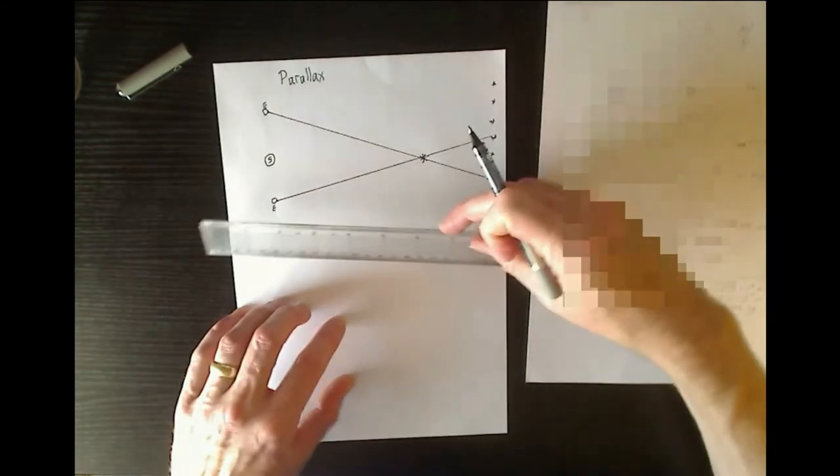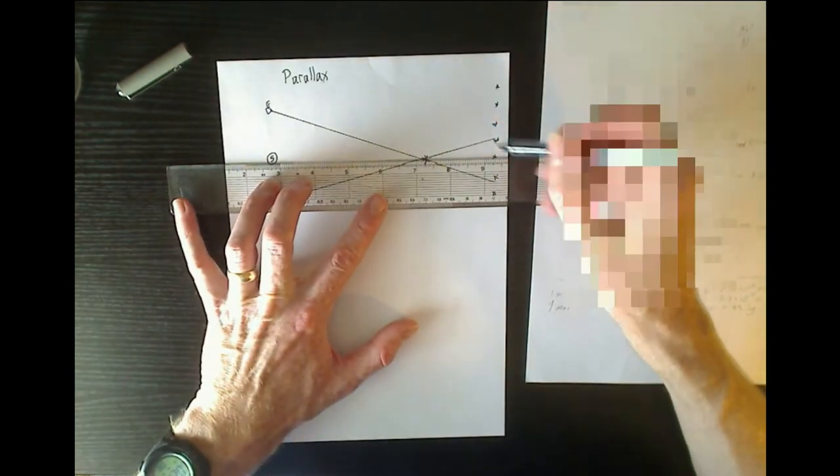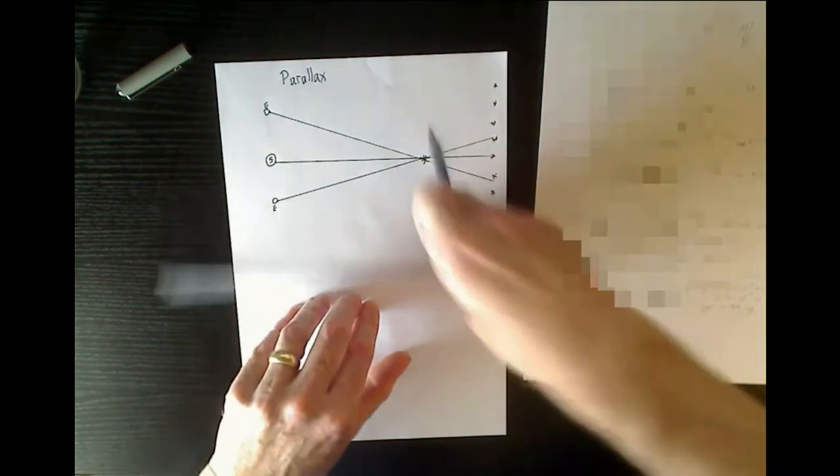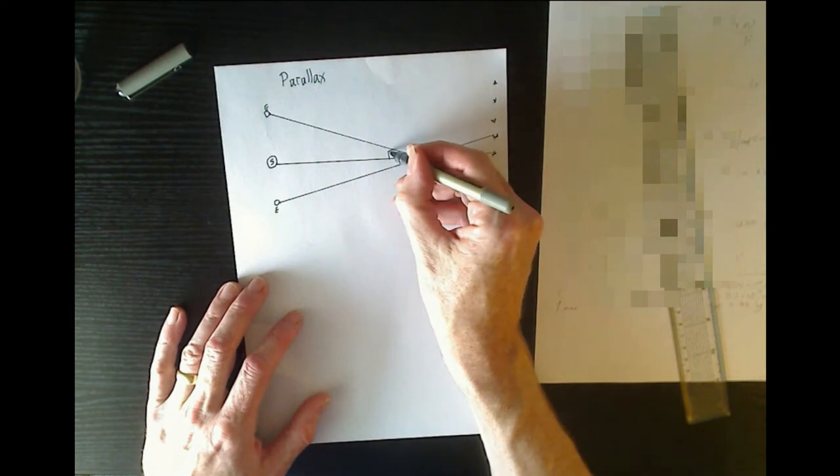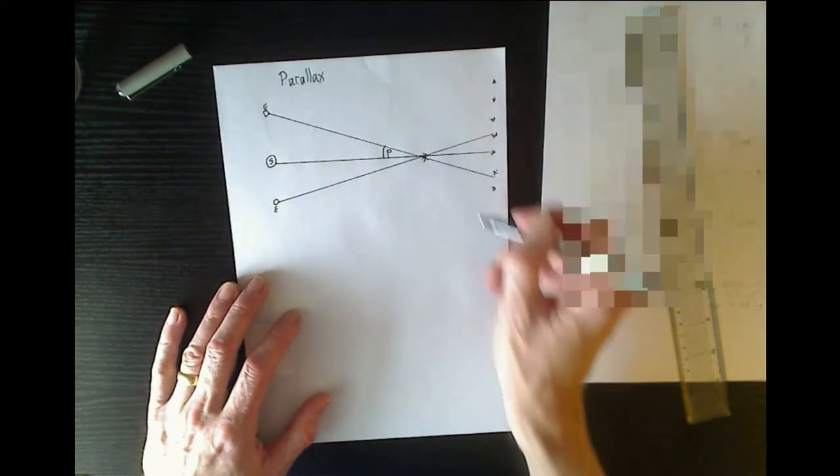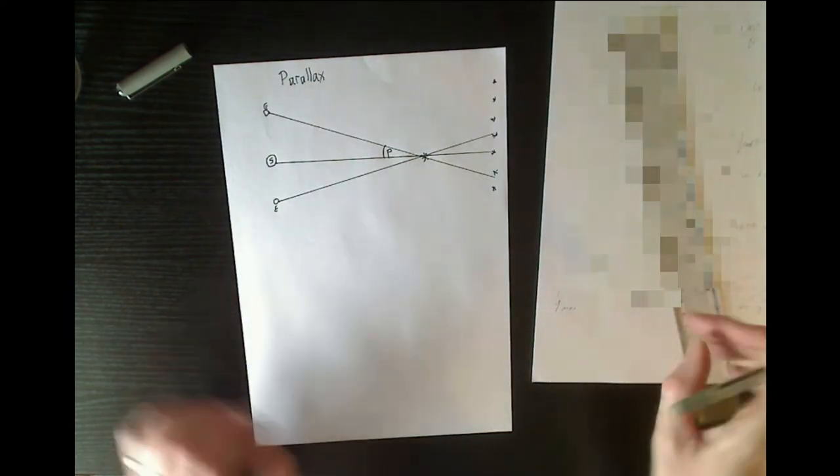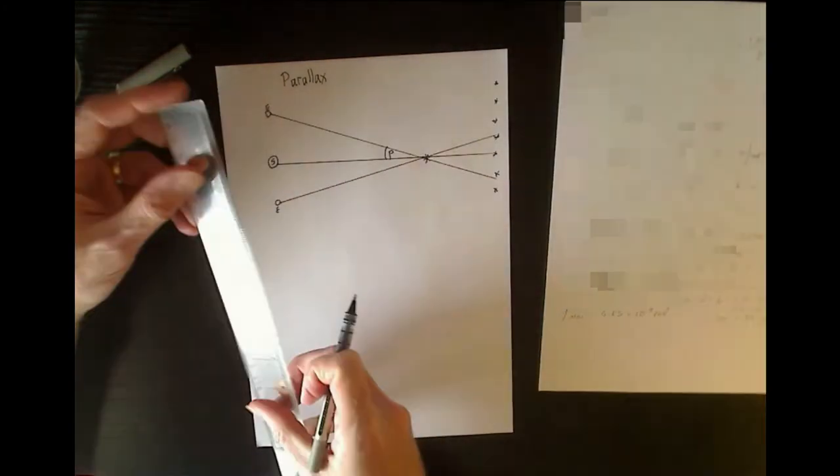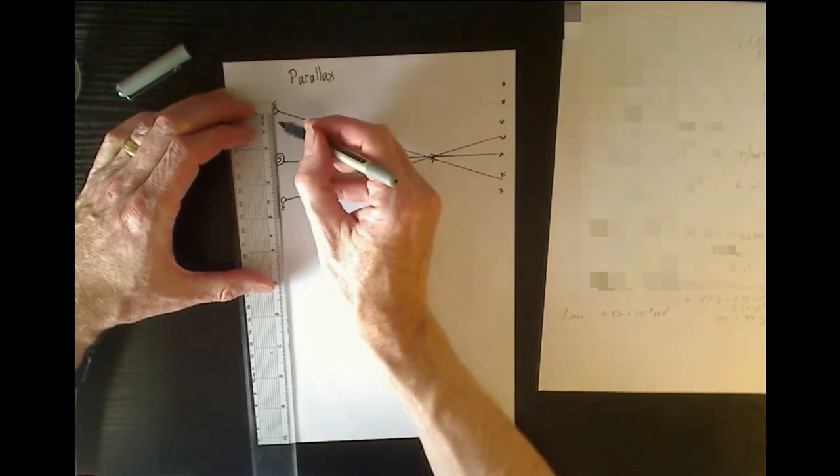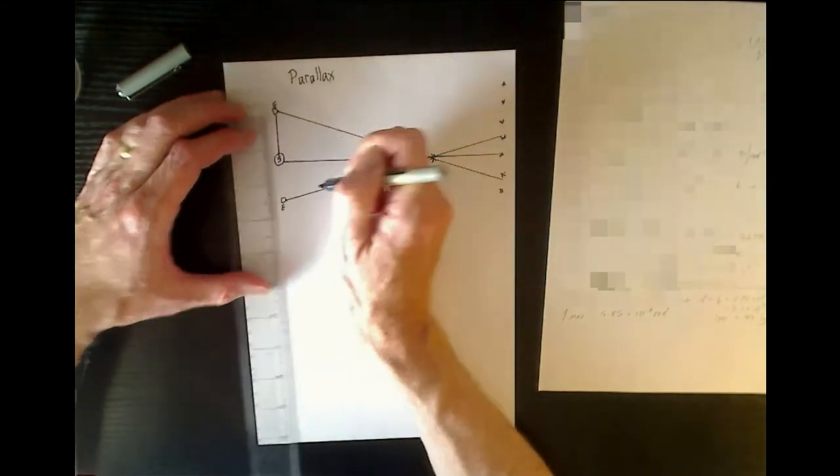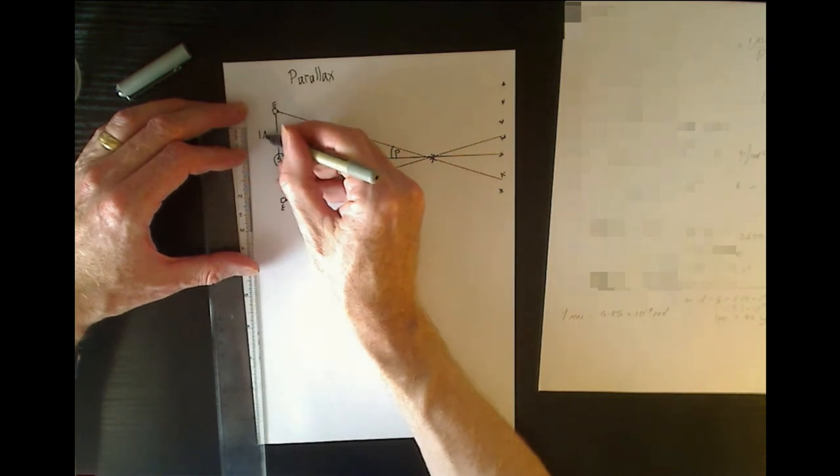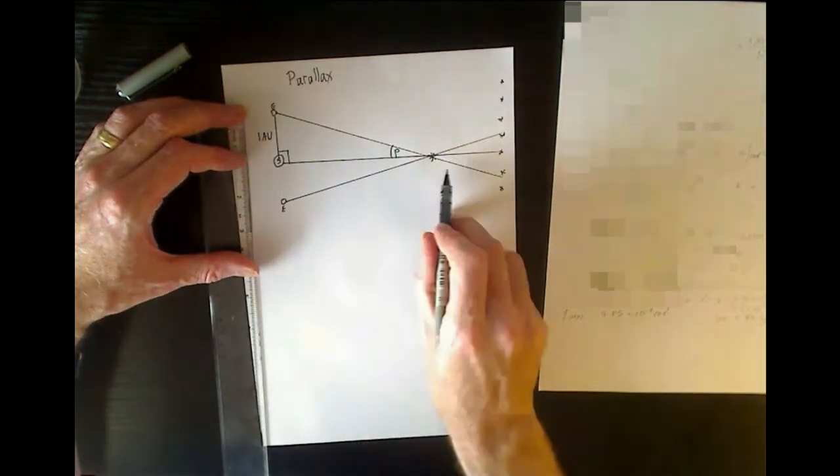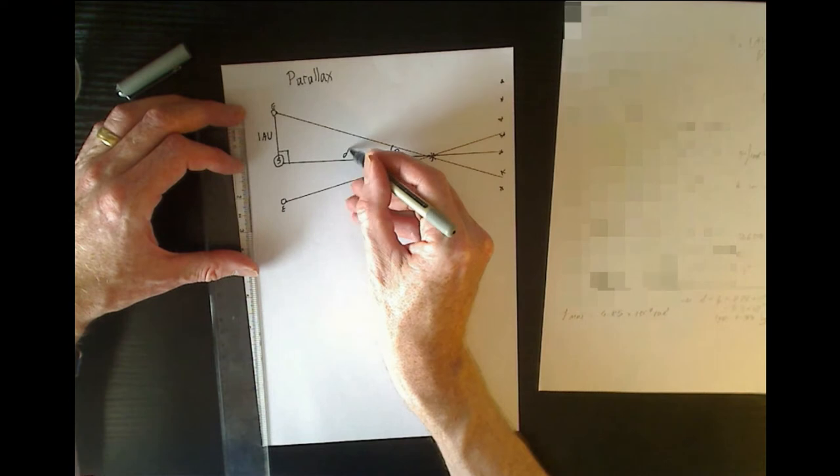So we have an angle between the two lines of sight, but what we actually take is the half angle. So we take the angle here, we call that P for parallax angle, and we're interested to find out using this technique how far away is this star. What we have already is the distance of one astronomical unit, which is the distance between the Earth and the Sun, and that forms a right angle triangle with the distance to the star being the unknown, which we can call D.